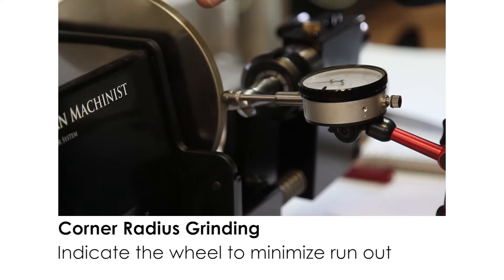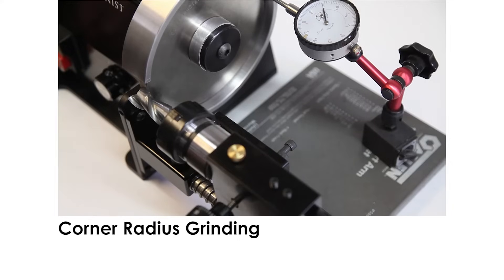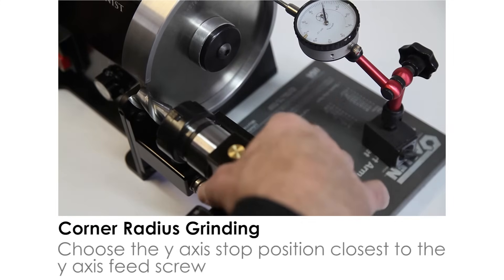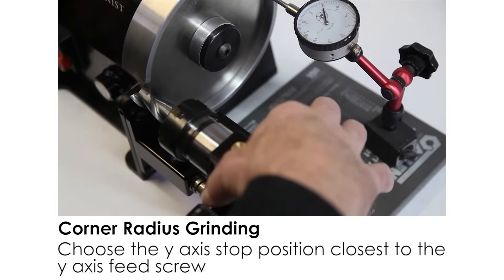Once you get set up we're going to turn the machine on at very low speed. Once this Y axis backstop is set it's just like the reamer, you can plunge and grind.